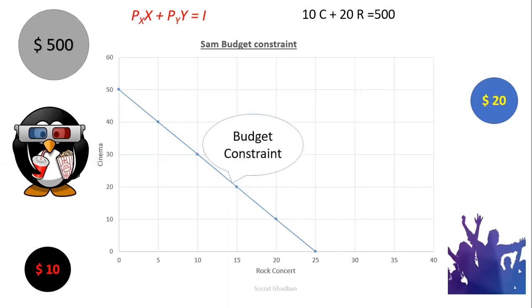So here we have this blue line, the budget constraint. Now in order to better understand this line and what does it mean, we have several points. Let's consider the first point, which is point A.